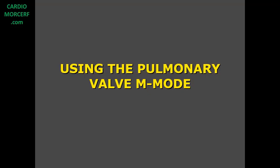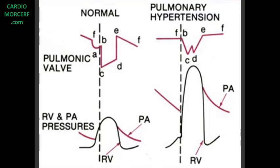Using the pulmonary valve M-mode, that's the best way to evaluate if there is pulmonary artery hypertension — not its value, but its presence. It's very simple to understand, and I only blame the absence of knowledge of M-mode nowadays for the reason why only a few echocardiographers use it. M-mode echo shows important abnormalities that may help us in this diagnosis.